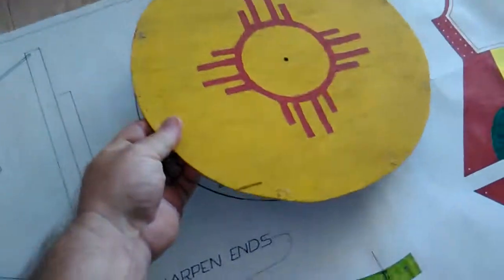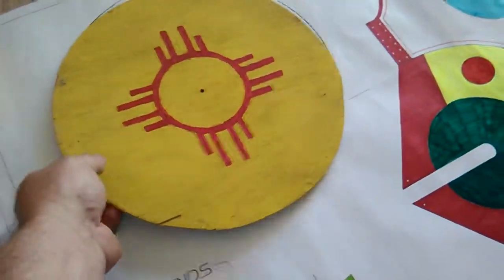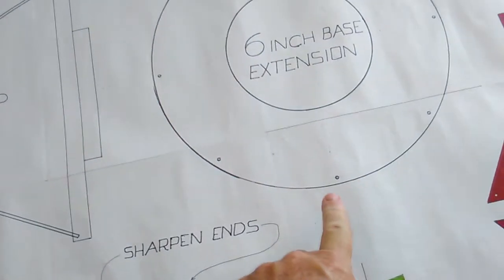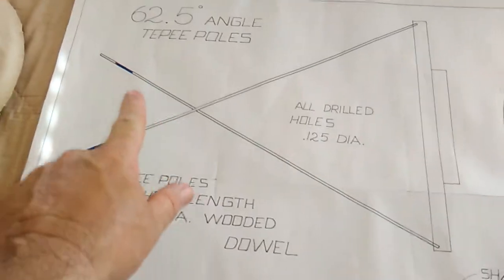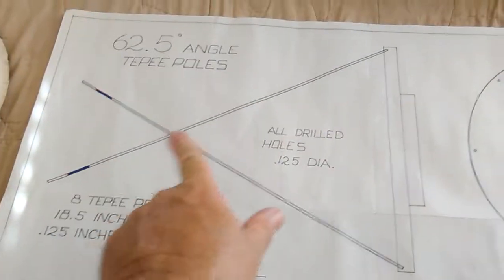So let's say here is my base. I'm going to take my base and here's what I need to do. I need to get these holes exactly at the same angle for the poles to come out symmetrical.